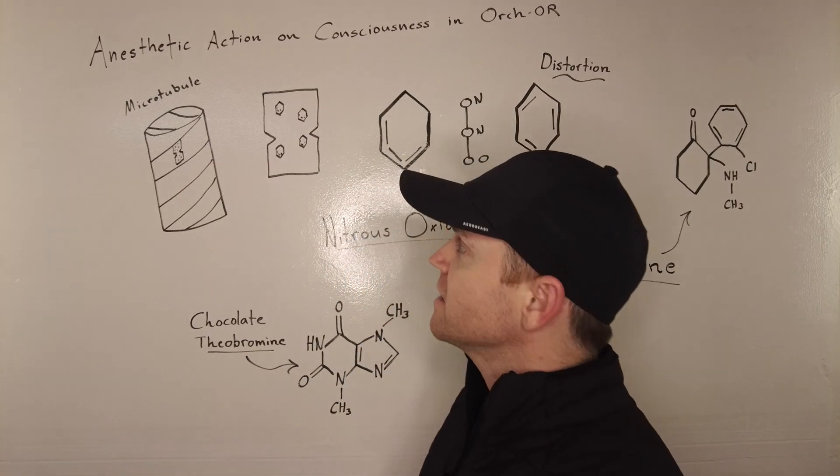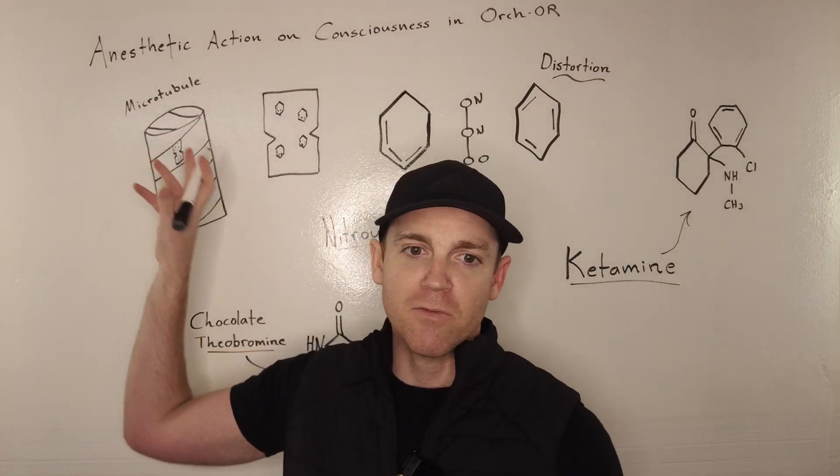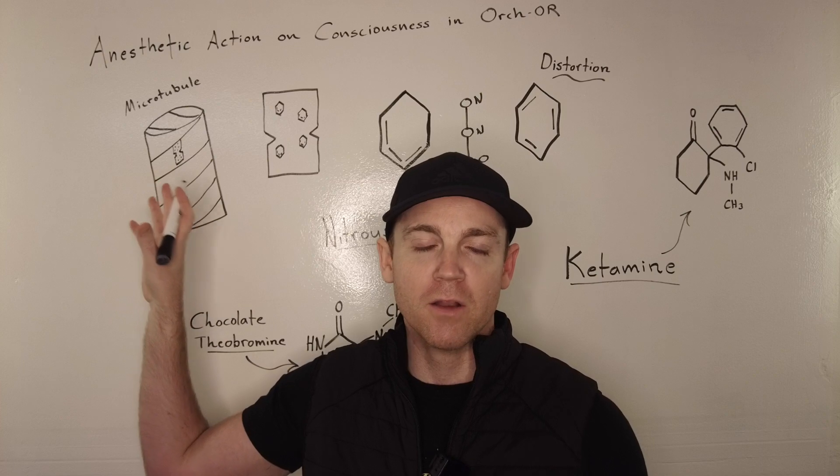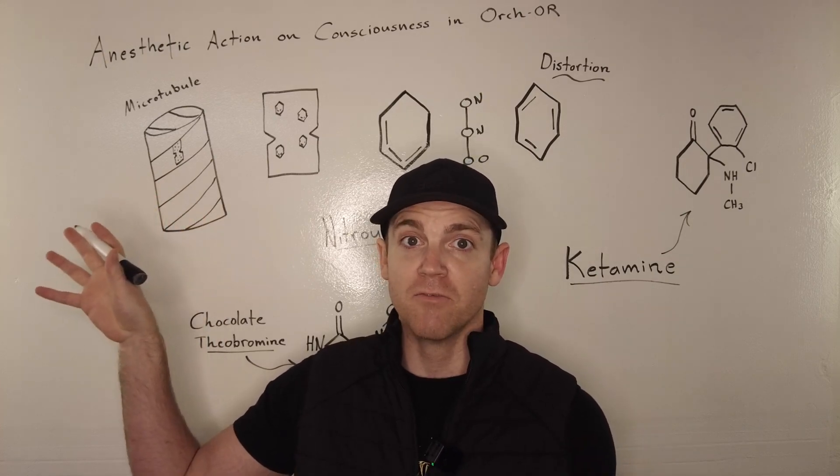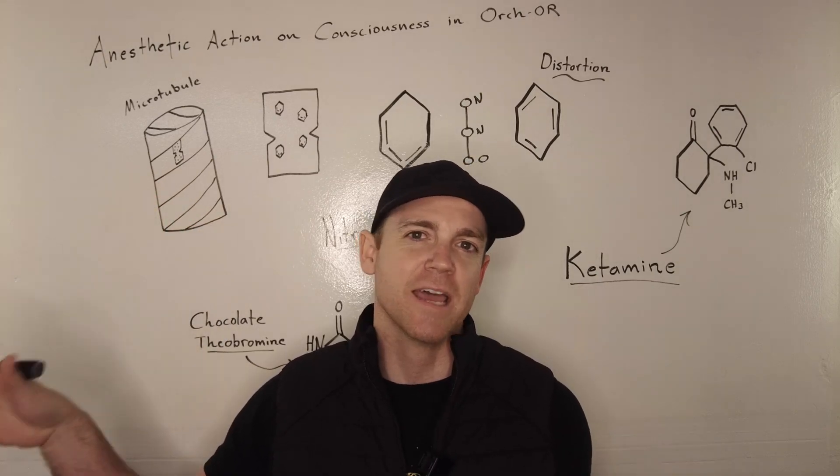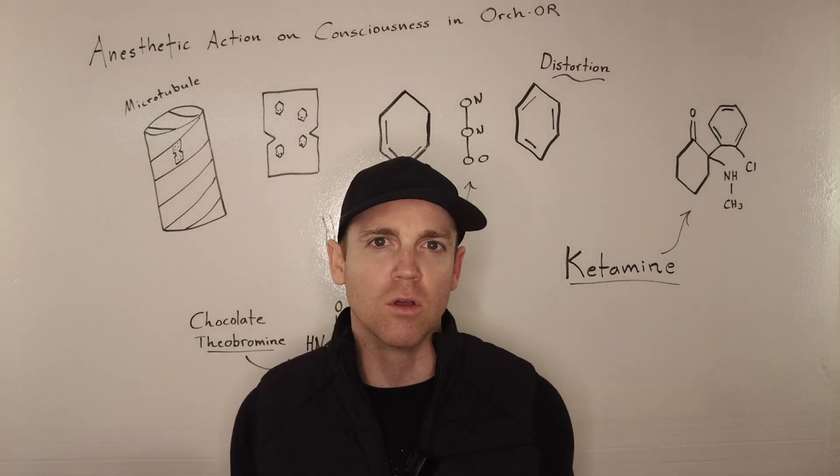So first thing we have here is, obviously, we have the famous microtubule, part of the cytoskeleton commonly found in your pyramidal neurons inside of your prefrontal cortex and cortical level five.